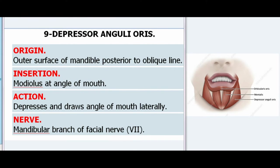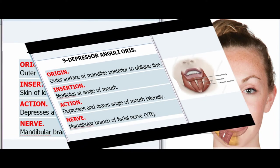9. Depressor Anguli Oris. Origin: Outer surface of mandible posterior to oblique line. Insertion: Modiolus at angle of mouth. Action: Depresses and draws angle of mouth laterally. Nerve: Mandibular branch of facial nerve (VII).